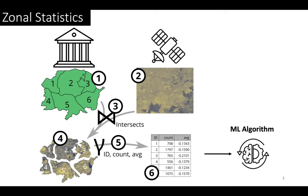In our example, we have two input datasets: a set of regions obtained from a governmental agency and a satellite image. As shown in steps 3 and 4, zonal statistics performs a join operation to group image pixels according to their region, and then in step 5, it calculates some aggregates for each region, like the count of pixels and the average of the pixel values. The result is a statistics table, which can then be used to train an ML algorithm.